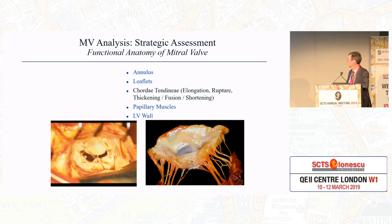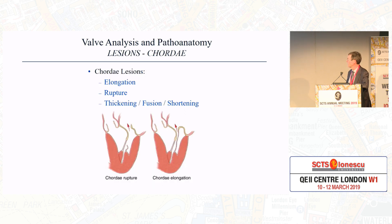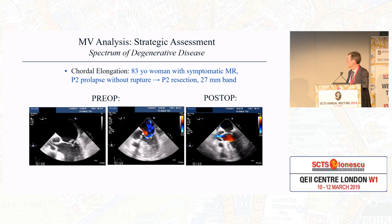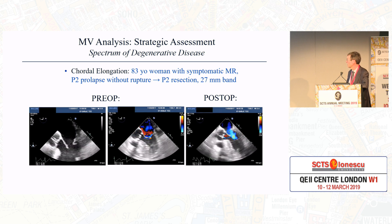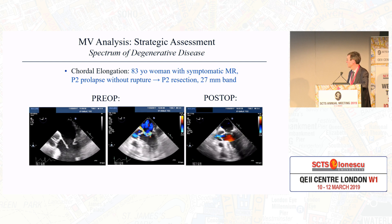Looking at the chordae tendineae — elongation, rupture, thickening, fusion, and shortening — these can affect any of the cords, but more often affect the posterior leaflet. Cordal rupture and/or elongation will both result in regurgitation. Here we have an example of prolapse with an elongated cord with a jet behind the anterior leaflet, demonstrating a posterior leaflet abnormality, and following repair, elimination of regurgitation. This patient had P2 prolapse without rupture; resection and a band fixed the abnormality.